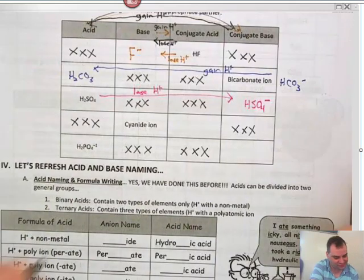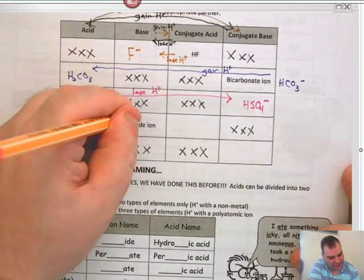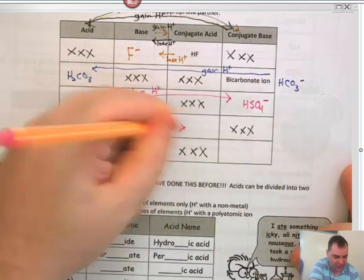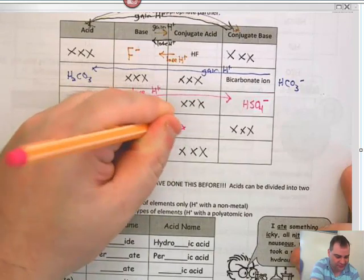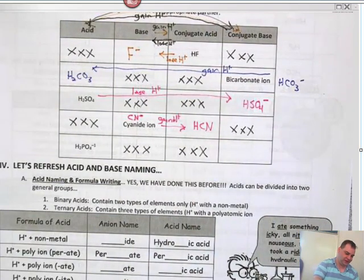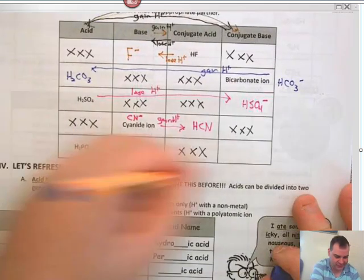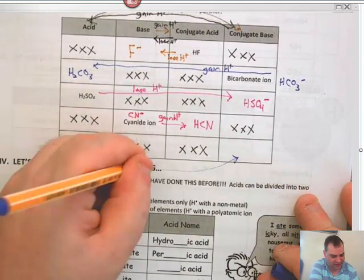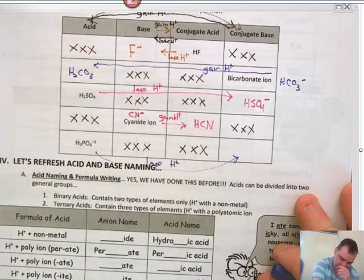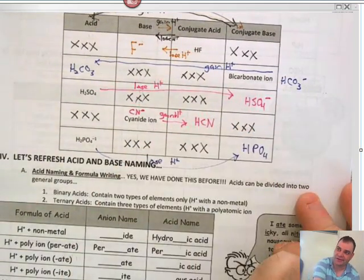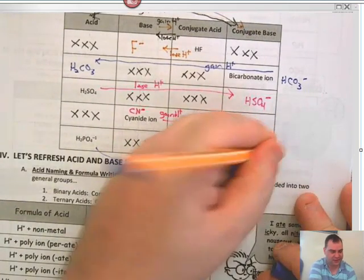Cyanide is CN⁻ — that's on the polyatomic ion list. We're going to gain H⁺ here, so it becomes HCN. Finally, H₂PO₄⁻ is an acid, and acids lose H⁺, so we go to HPO₄²⁻ — the charge goes down another one to negative 2.